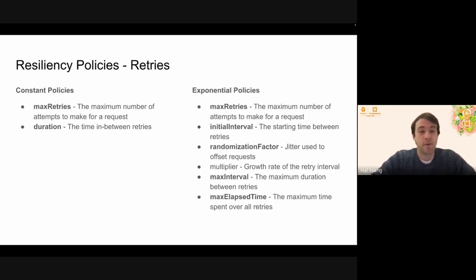So going into the policies just a little bit, retries, like I said, we have constant and exponential policies. Constant policies, really simple. They have a maximum number of retries and they have duration. Maximum number of retries, how many retries we have. Duration, how long in between each individual request.